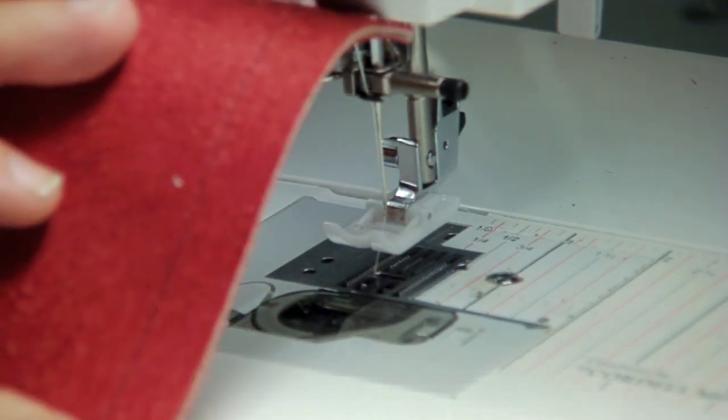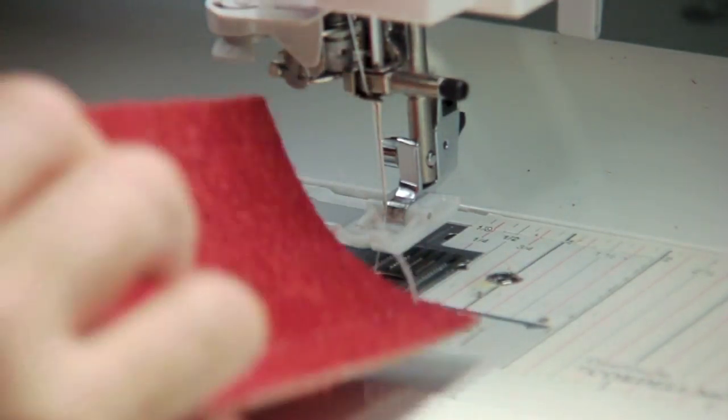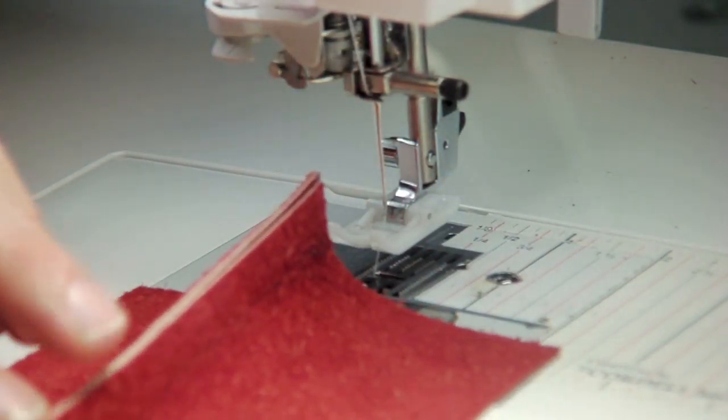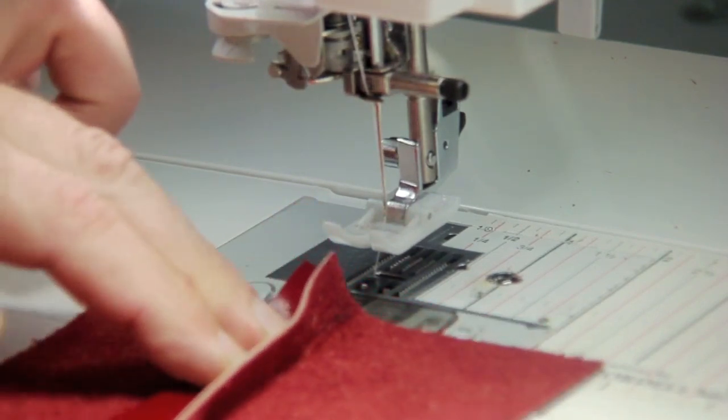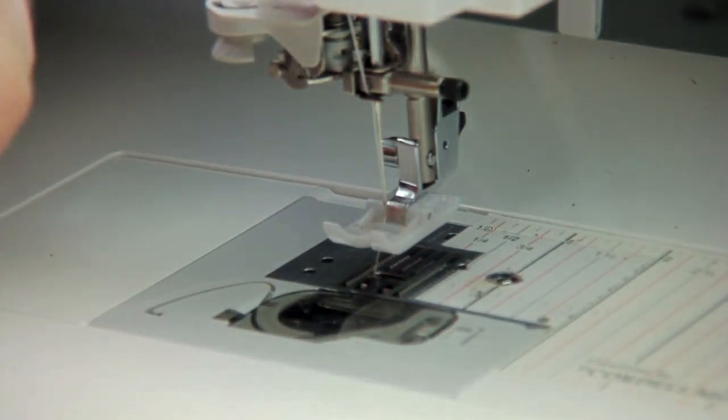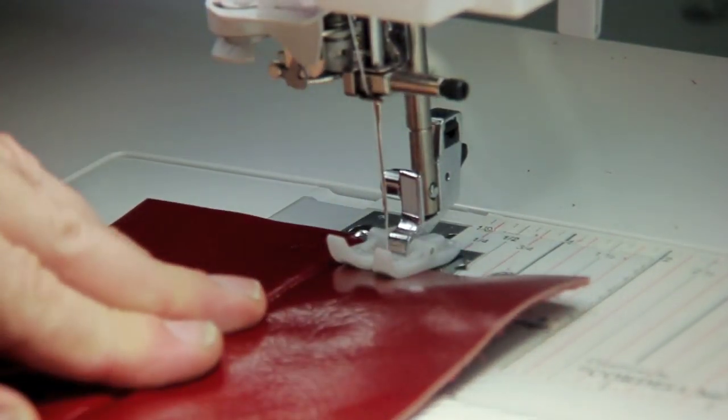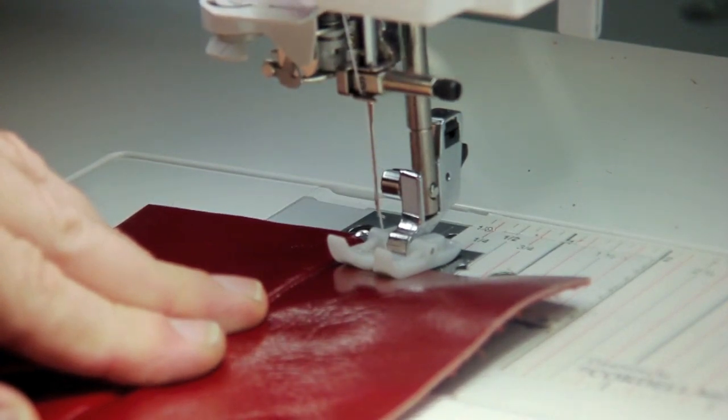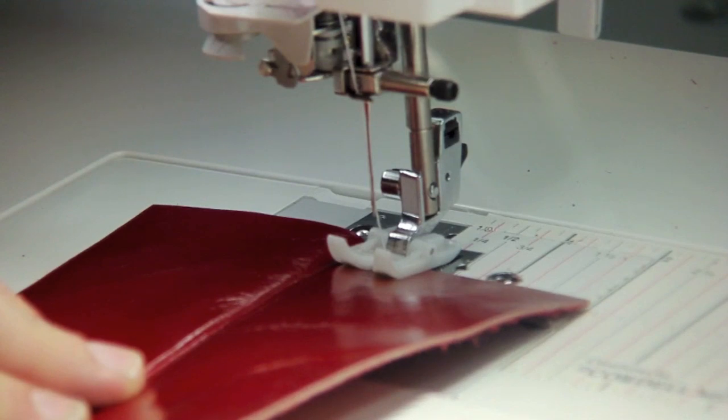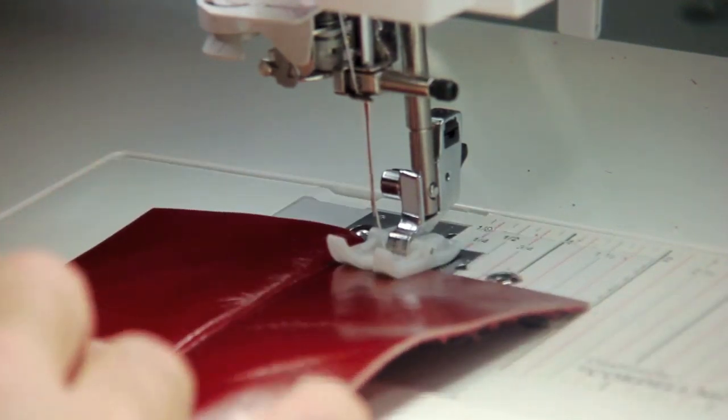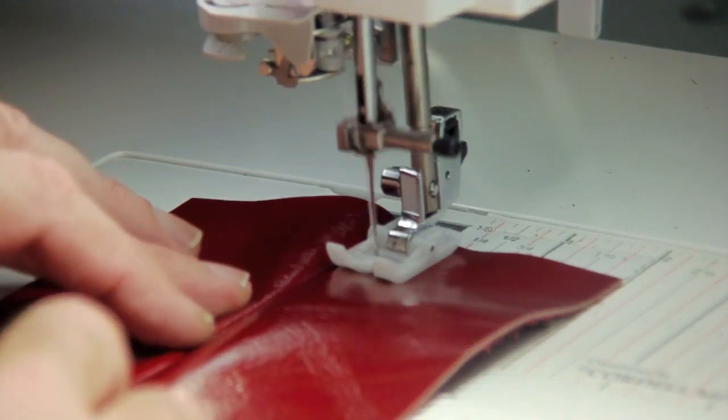Now I'm going to do what I call the butterfly seam, where I'm going to split this open in the back. This looks really pretty when you're doing patchwork for leather. You'll see this in a lot of handbags. I'm going to move my needle all the way over to the left. By the way, I'm using a Teflon foot. I'm going to increase my stitch length to 5.0 and now I'm going to topstitch, following around the edge there.